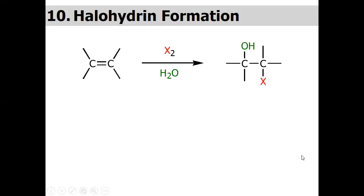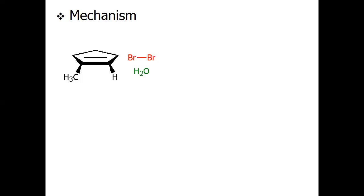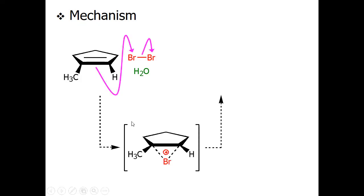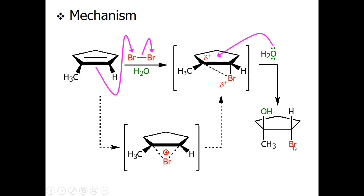Next is halohydrin formation. The main difference between halohydrin formation and halogenation is the solvent — when using a protic solvent we get the halohydrin, due to addition of OH and X across the double bond. X is the electrophile and the reaction follows Markovnikov's rule. In the mechanism, with methylcyclopentene, the pi electrons establish a three-membered cyclic bromonium intermediate. Because the structure is unsymmetrical we have a tertiary and a secondary carbocation; water attacks the more favorable tertiary carbocation as a nucleophile to give the bromohydrin.